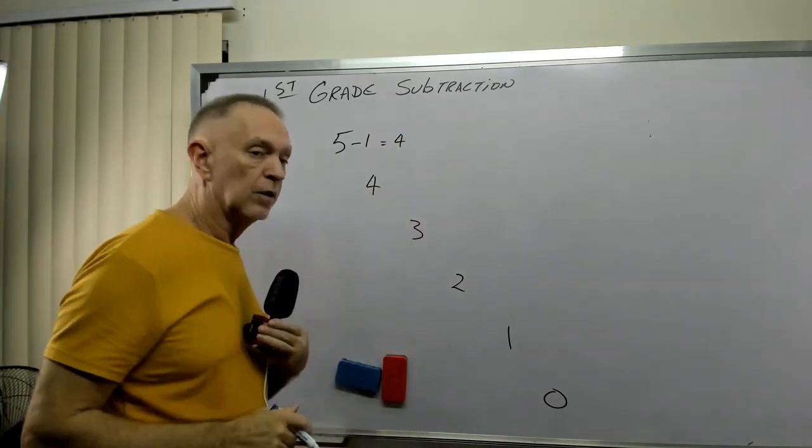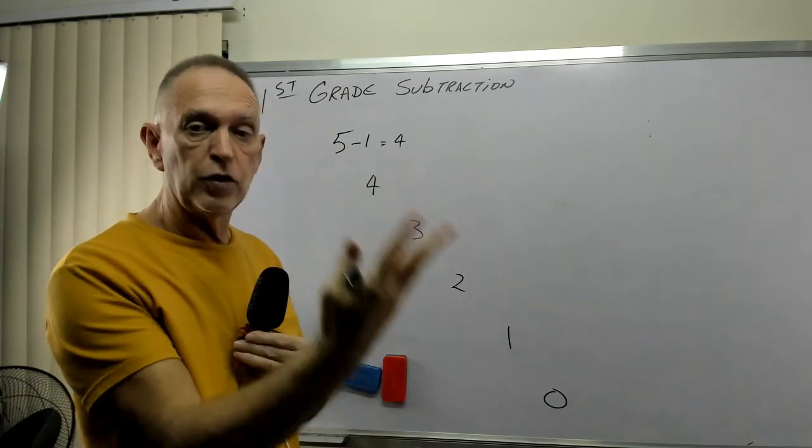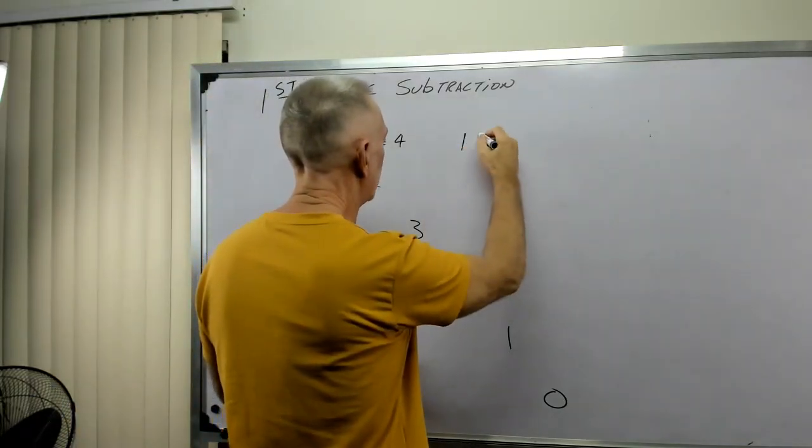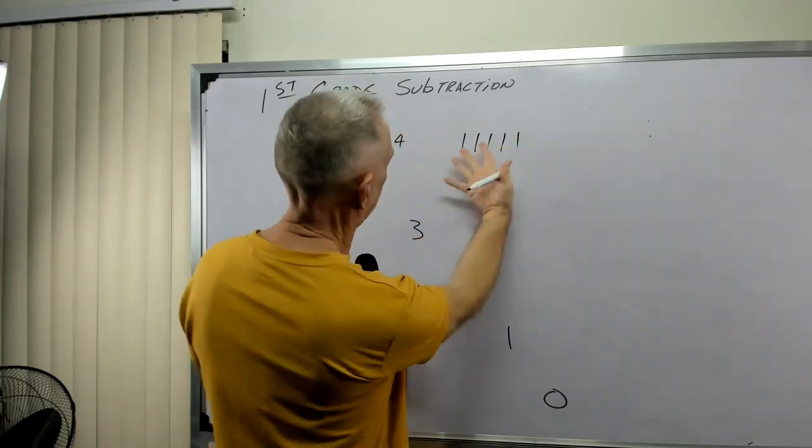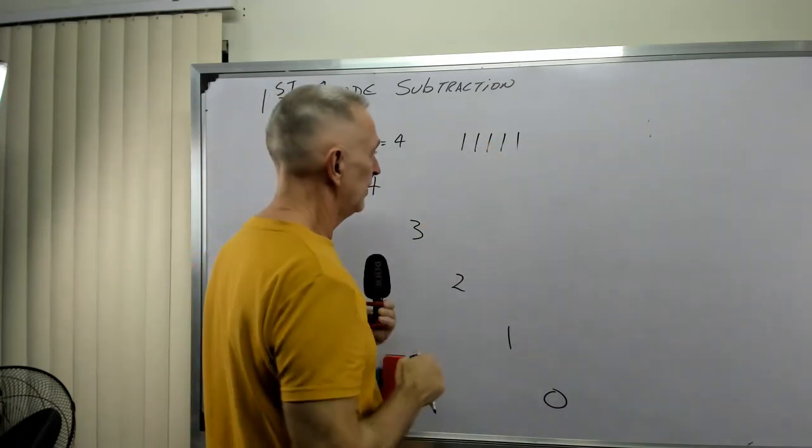Now, we can do this in different ways. Remember in our other video, we used our fingers. We said, let's let five, two, three, four, five. That's five fingers. I guess four fingers and a thumb.